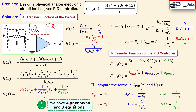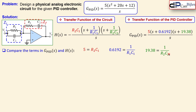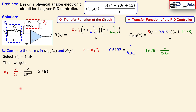With four unknowns and three equations, we cannot get unique values for each component — we need to select one component value to determine the other three. This is a similar problem to the previous two examples. We choose C1 = 1 µF, preferring to fix the capacitor since exact capacitor values are harder to source practically, while resistors are more easily adjusted.